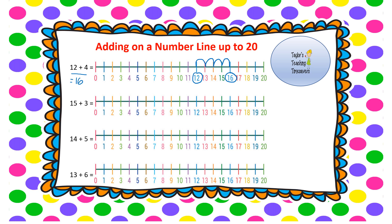Next question: 15 add 3. Start at 15, count on 3 spaces: 1, 2, 3. We've landed on 18, so 15 add 3 equals 18. You could pause the video and try the next couple of questions before I do them — let's see if our answers match.